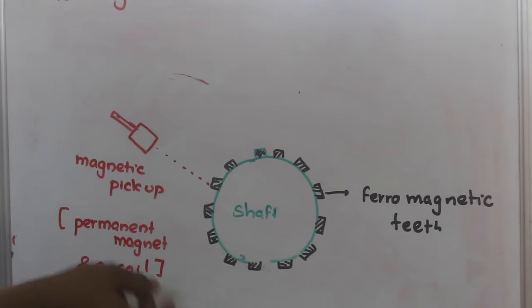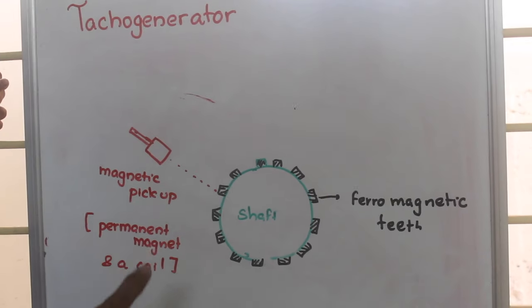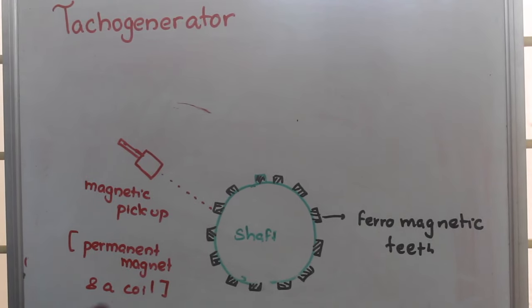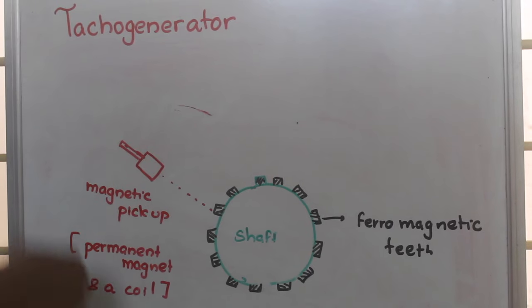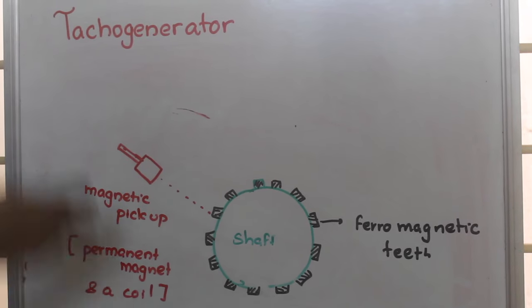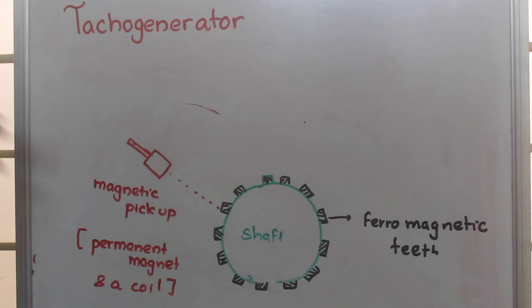Because of that, the change in reluctance will be more, resulting in a difference in the induced EMF. That induced EMF will be calibrated to find the RPM.